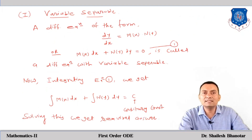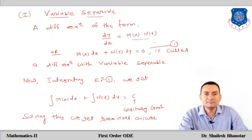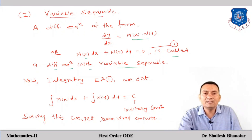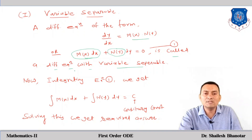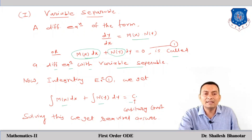Let us understand what variable separable means. If we consider the general form dy/dx = M(x)·N(y), this can be written as M(x)dx + N(y)dy = 0. This is called a differential equation with variables separable — here one term is a function of x only and the other is a function of y only, so we can integrate each separately. After integrating, an arbitrary constant C appears in the solution.